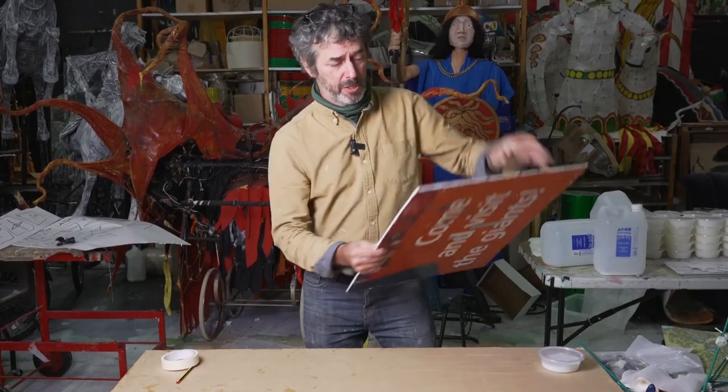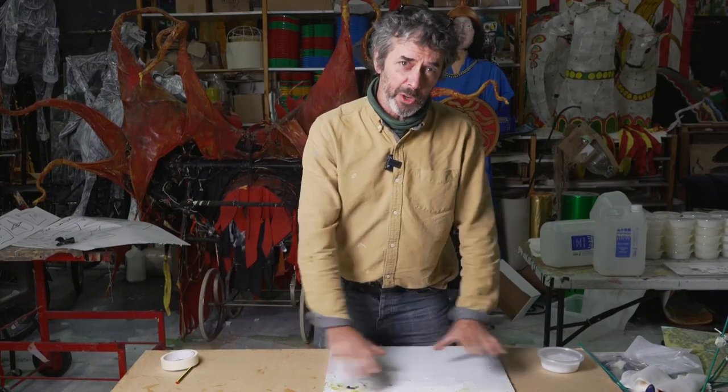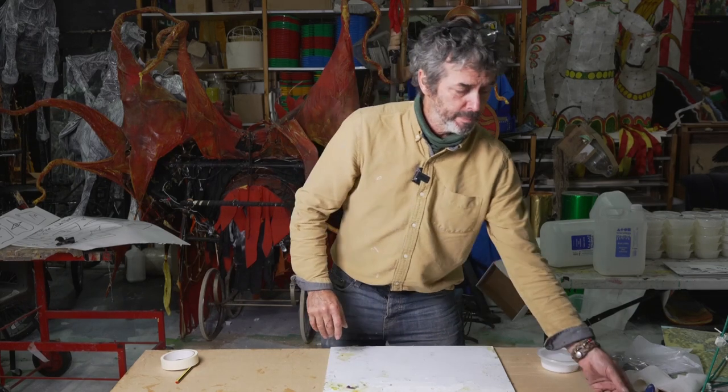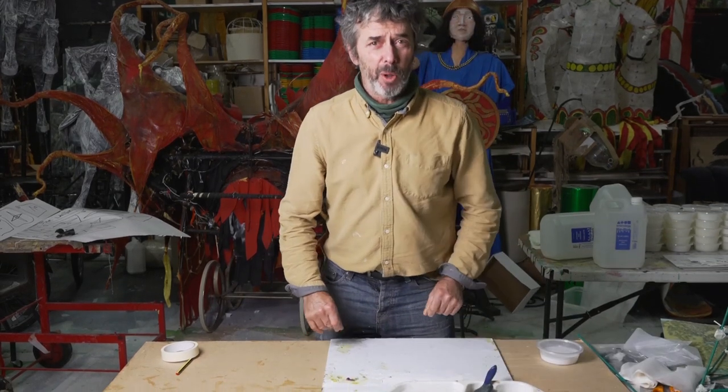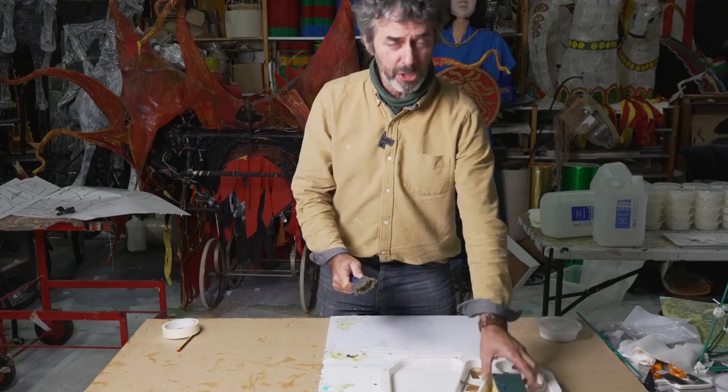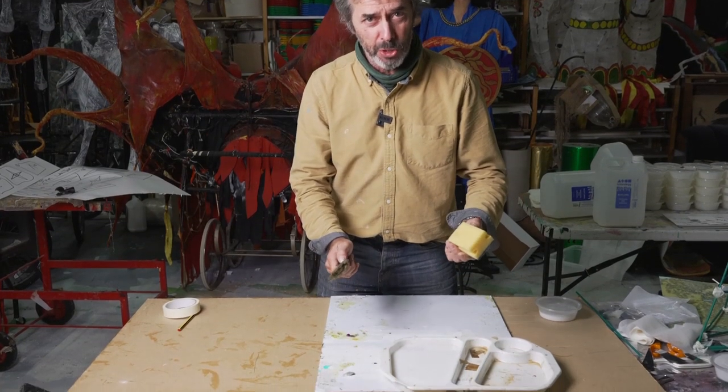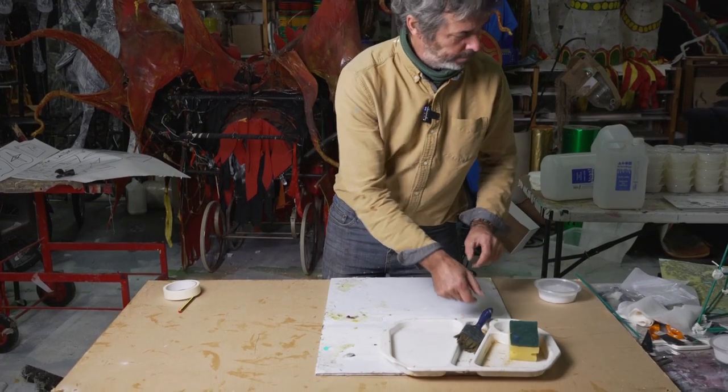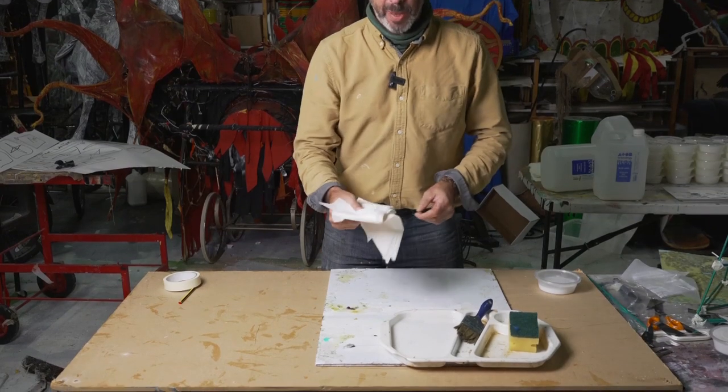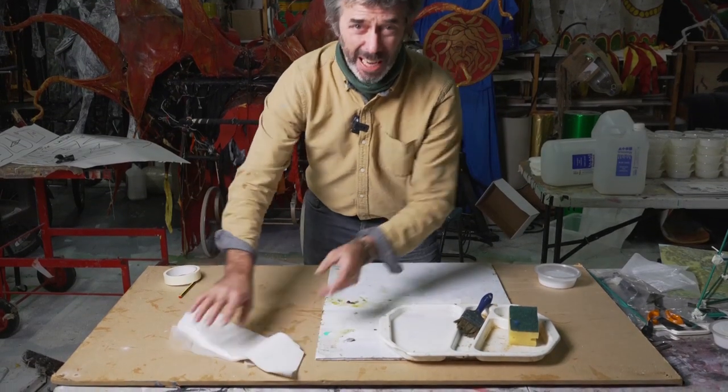Get your waterproof surface—this is mine. If you've got a plastic tray, a plastic tablecloth, something like that, that'll be fine. This is where we're going to do the gluing of the paper. Your pot of glue and then your paintbrush or your sponge, depending on which you want to use.